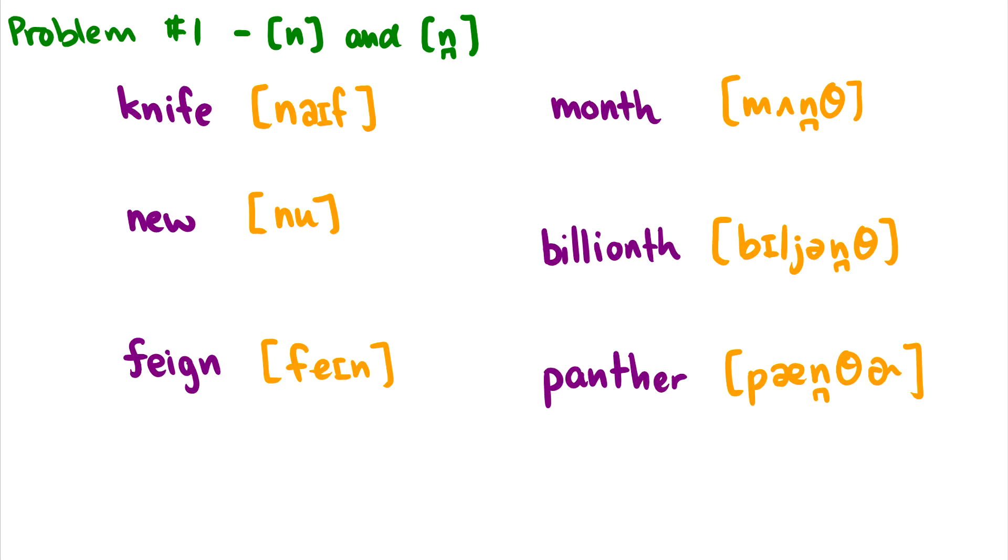So the question is, are these allophones? And we need to check and say, well, what environments is this [n̪] with the dental occurring, and what environments is the regular [n] occurring in? If we look at knife, new, and feign, knife, this [n] occurs at the beginning of a word. We could say it occurs at the beginning of the word, which we put with a hashtag meaning word, and then a line to say the [n] is there. And then an [aɪ] comes after it. In new, [n] occurs at the beginning of the word, and there's an [u] after it. And in feign, [n] occurs at the end of a word, and there's an [eɪ] before it. So these are all the different environments that the [n] occurs in.